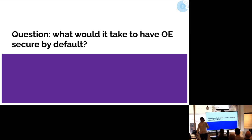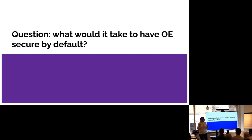What would it take to have OpenEmbedded that's secure by default? I've identified a few elements with pretty concrete situations and concrete solutions that we can be talking about.